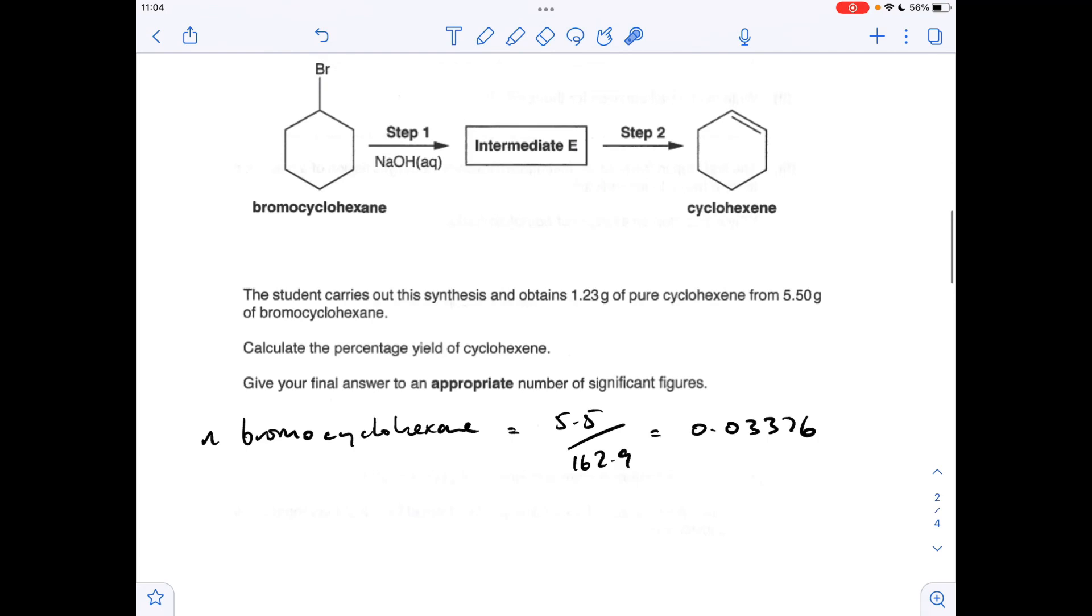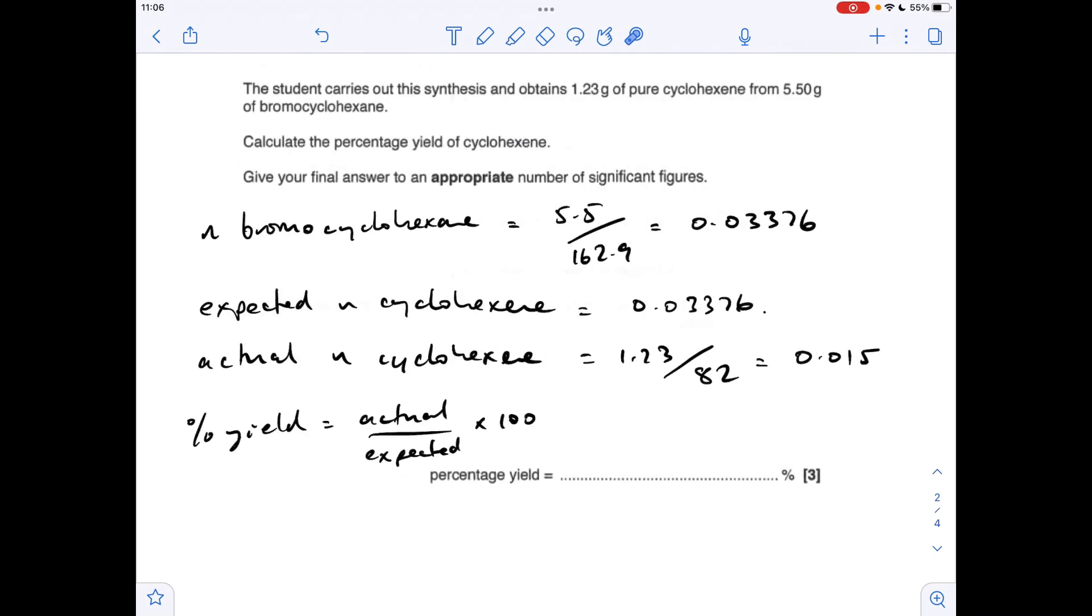So if we look at the equation, if we've got that many moles of bromocyclohexane, we should expect to make the same number of moles of cyclohexane. So now we need to calculate the actual moles of cyclohexane that's been formed, so mass over the MR of cyclohexane. So that's coming out at 0.015 moles. So to work out the percentage yield, we take the actual moles, divide by the expected moles, and multiply by 100, which to three significant figures is 44.4%.